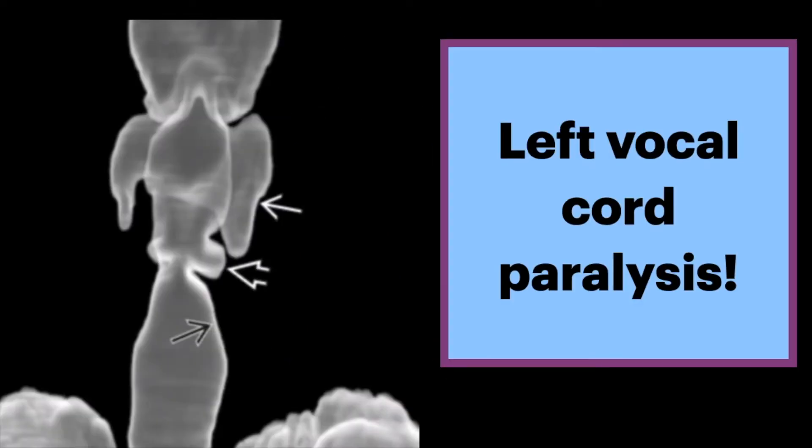Here is an anteroposterior 3D volume rendering of the airway. The straight arrow shows an enlarged piriform sinus, the open arrow shows an enlarged laryngeal ventricle, and the straight dark arrow shows flattening of the subglottic arch.